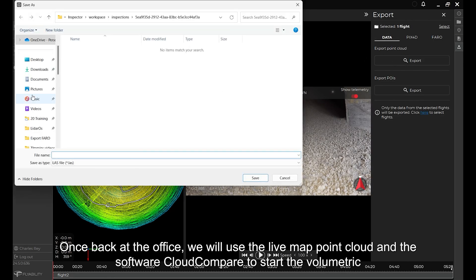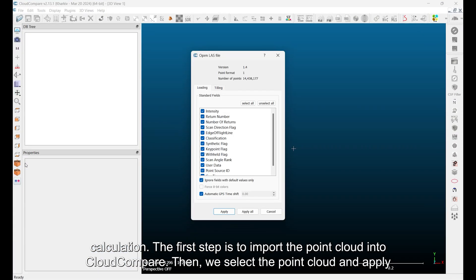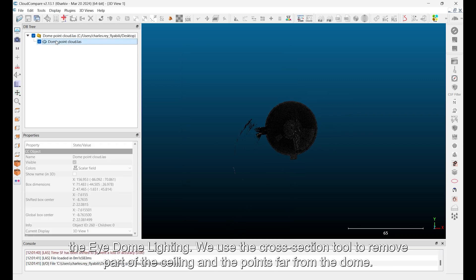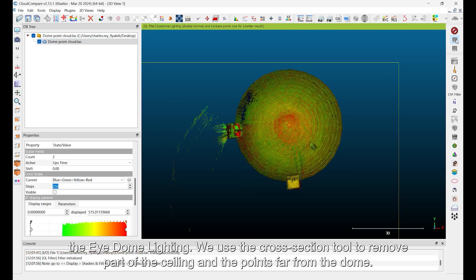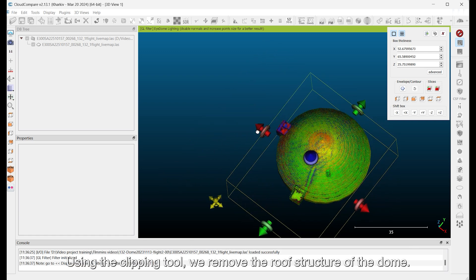Once back at the office, we will use the live map point cloud and the software Cloud Compare to start the volumetric calculation. The first step is to import the point cloud into Cloud Compare. Then, we select the point cloud and apply the i-dome lighting. We use the cross-section tool to remove part of the ceiling and the points far from the dome. Using the clipping tool, we remove the roof structure of the dome.